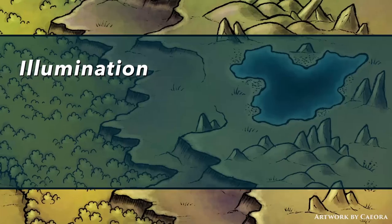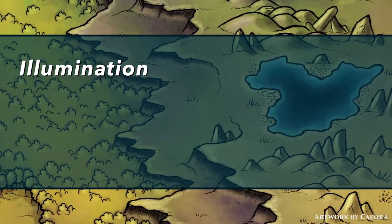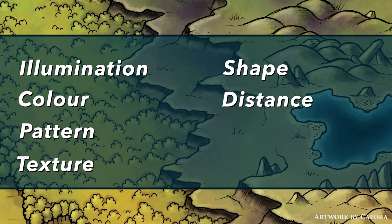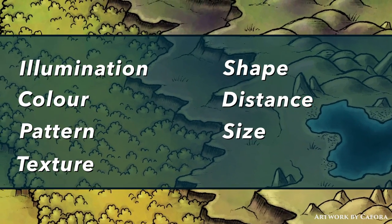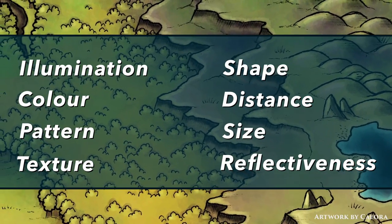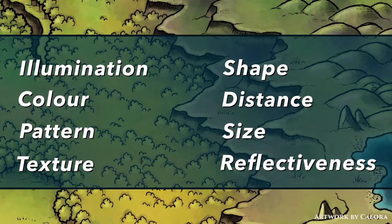Sight reveals a huge number of qualities about the world around us: illumination level, colour, pattern, texture, shape, distance, size, and reflectiveness — that is, if something's shiny or matte. You can use all of these qualities to manipulate the mood in your scene.